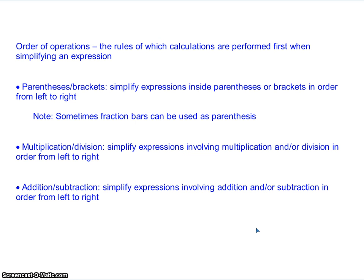Once you get done with the parentheses and the brackets, your next step is to do any remaining multiplication or division. Multiplication and division is always done from left to right — start from the far left side of the problem, and whichever one shows up first, you work it, then keep working your way to the right doing all the multiplication and division as you go. Once that's done, the same thing applies to addition and subtraction: start at the far left, work your way to the right. If you always work your problems in this order, you'll always come up with the same answer, and you should wind up with just a single number when you're done.